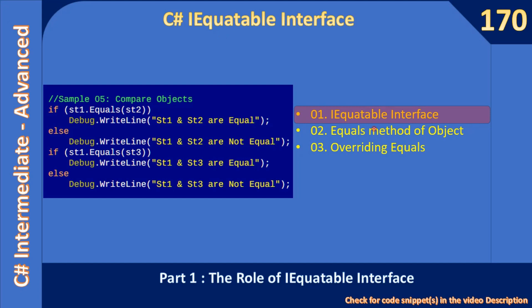You will learn what is the limitation of the Equals method that is present in the Object class. Then, how do you overcome the disadvantage of the Equals method in the Object class by overriding it in our custom class.